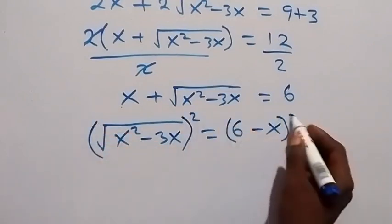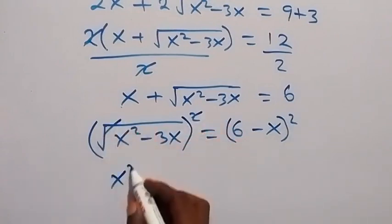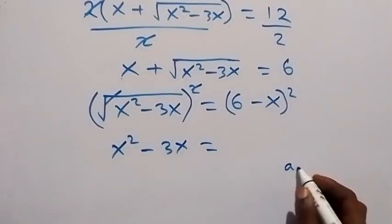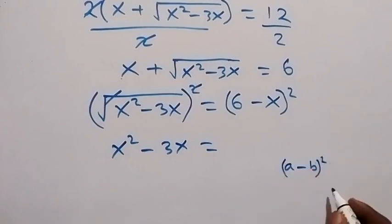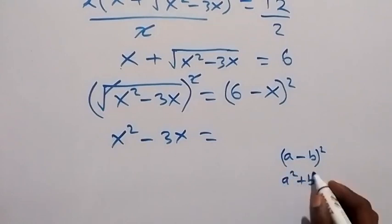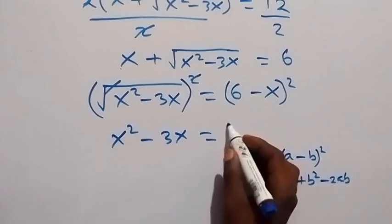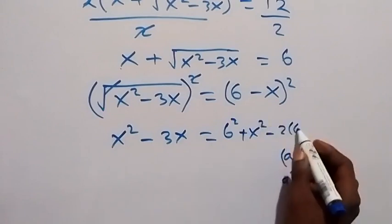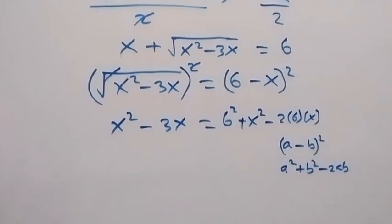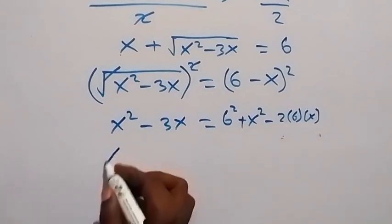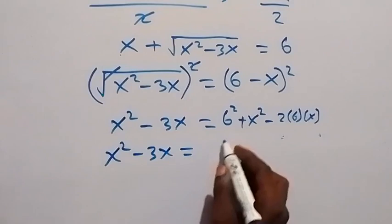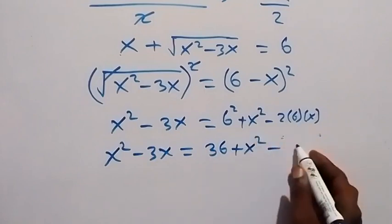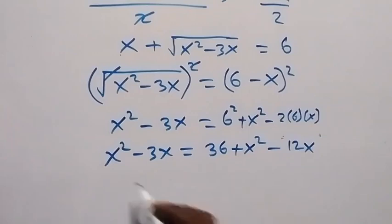Squaring both sides, the square cancels the square root and we have x squared minus 3x on the left. The right side follows the pattern a minus b all squared, which is a squared minus 2ab plus b squared. So we get 6 squared plus x squared minus 2 times 6 times x, which gives 36 plus x squared minus 12x.